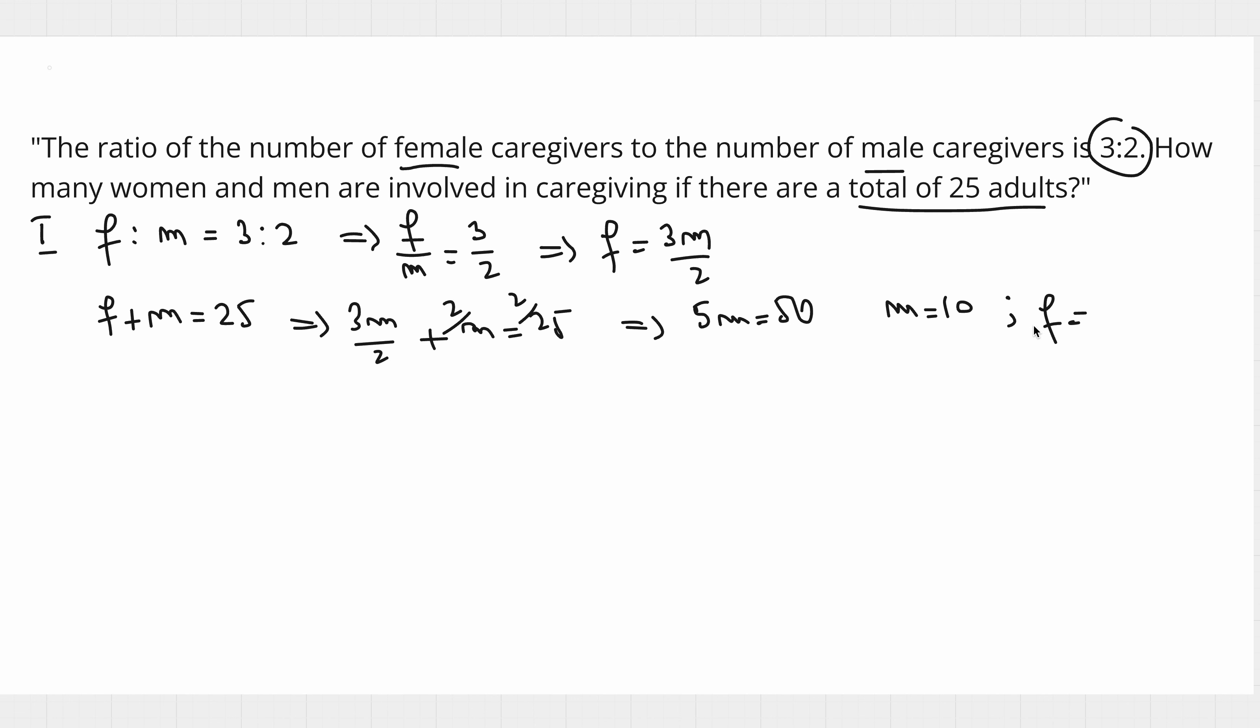And the number of females is 3 times 10 over 2, which is 15. This is the longer method of solving this problem. The shortest method is that what we understand from the ratio F to M is that for every 3 females we have 2 males, so we are working in groups of 5.